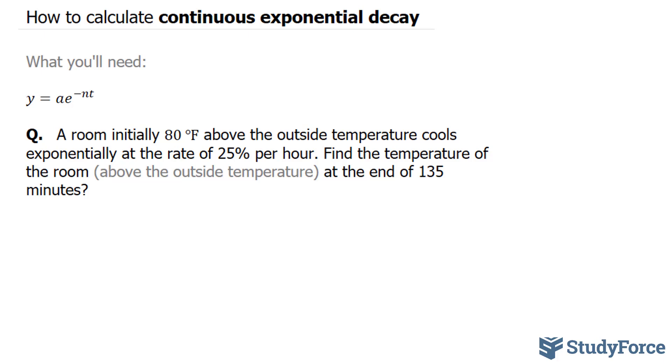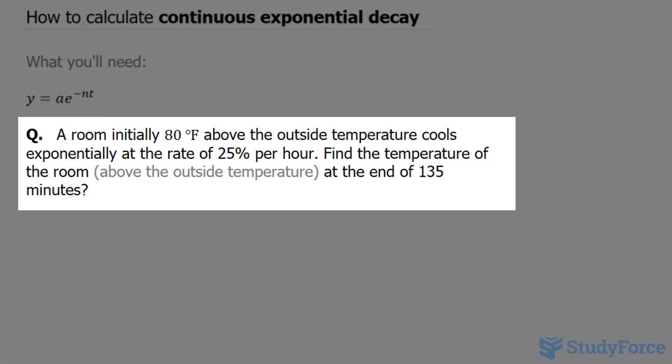The question reads: A room initially 80 degrees Fahrenheit above the outside temperature cools exponentially at a rate of 25% per hour. Find the temperature of the room above the outside temperature at the end of 135 minutes.